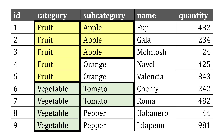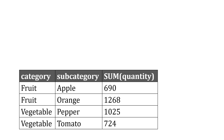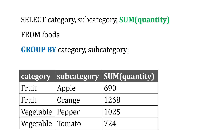Let's say we wanted not only the category, but sums for the subcategory too — so two layers there. We can adjust this: SELECT the category and the subcategory in addition to the SUM of the quantity, and then GROUP BY those two things — GROUP BY the category and the subcategory — and the order of those is important.